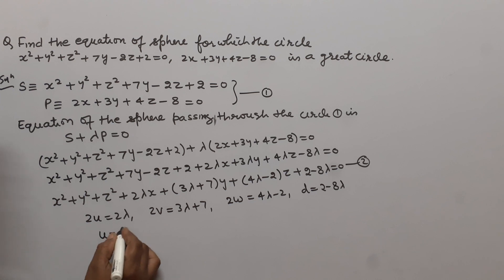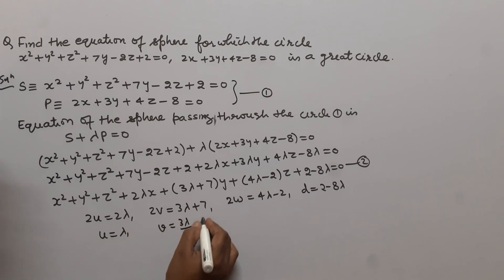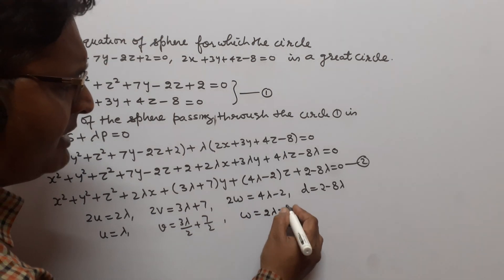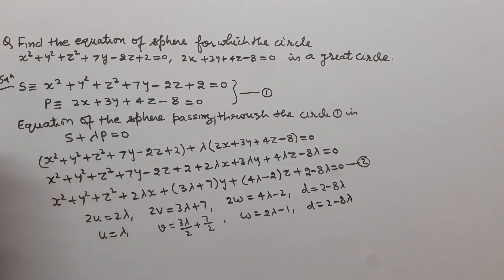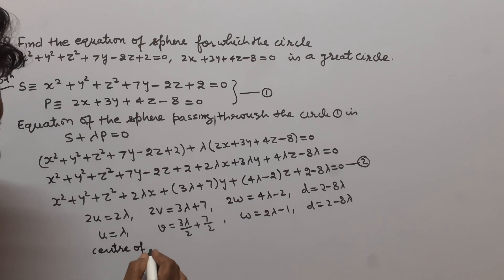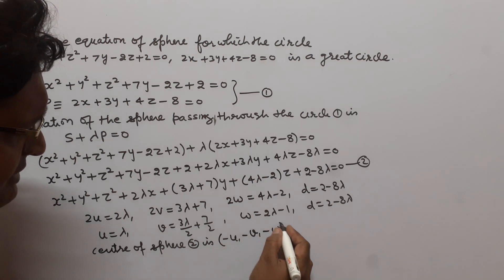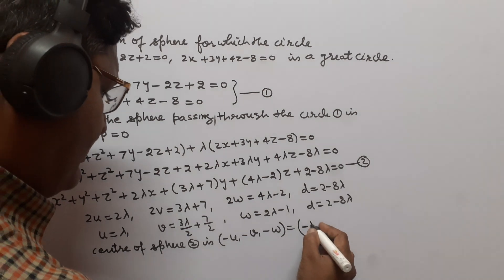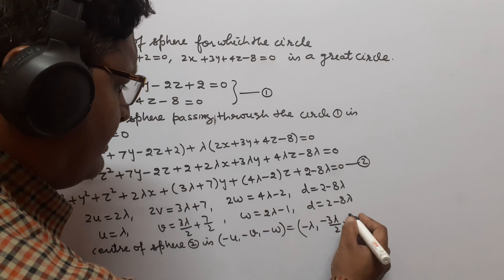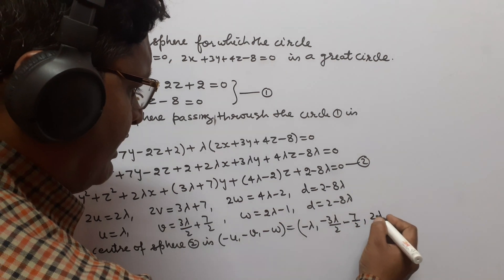Therefore u = λ, v = (3λ/2) + (7/2), w = 2λ - 1, and d = 2 - 8λ. The center of sphere 2 is (-u, -v, -w) = (-λ, -3λ/2 - 7/2, 1 - 2λ).